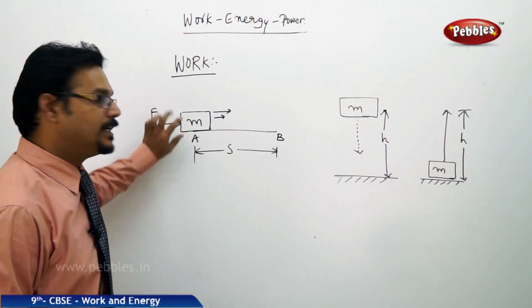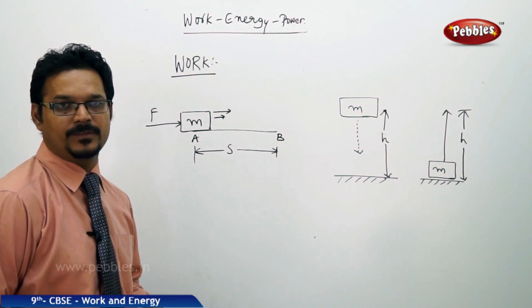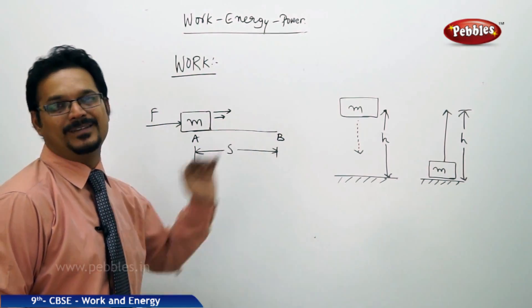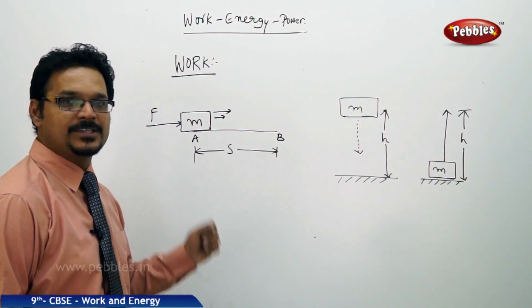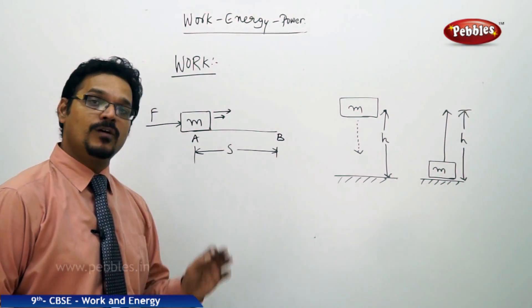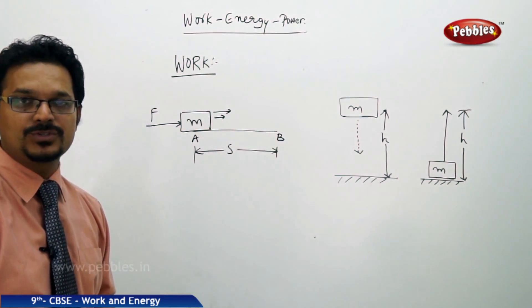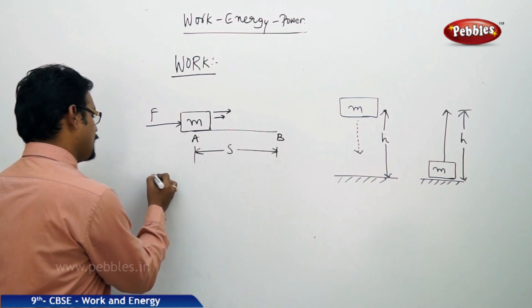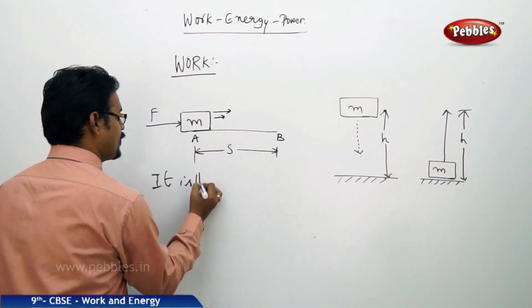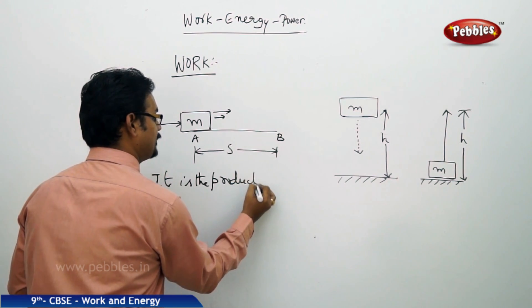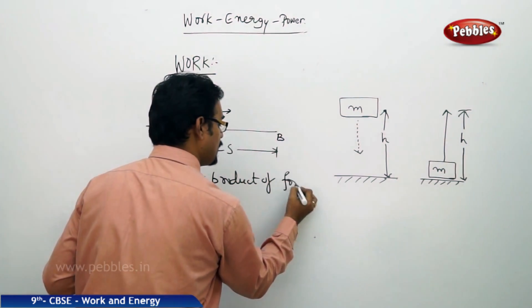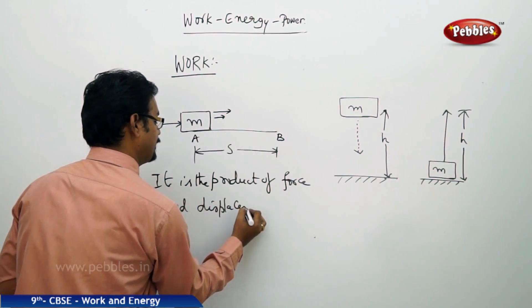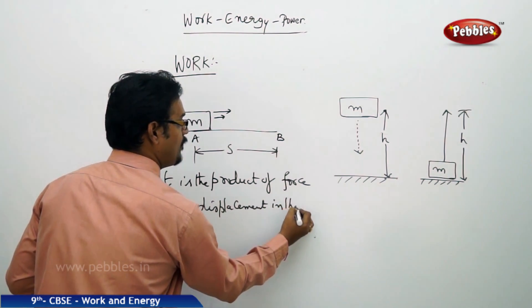So what is work? See the example here. There is a body of mass m. It is at point A, it is in rested state. Now force F is applied on the body, then the body started moving to point B and it has traveled a distance S. Then work is defined as it is the product of force and displacement in the same direction.